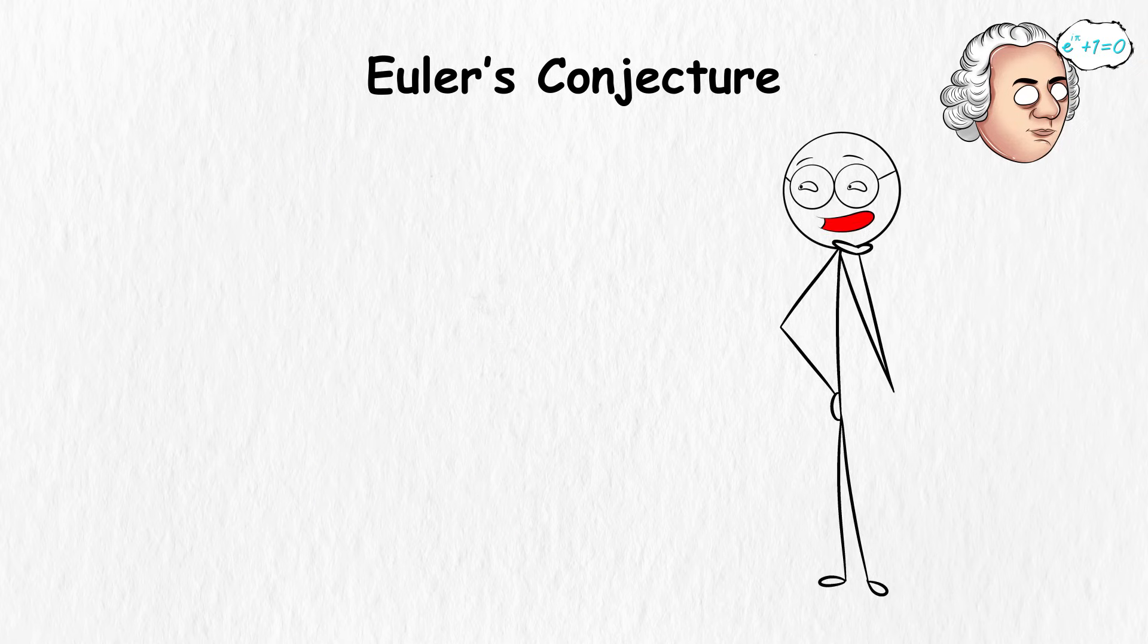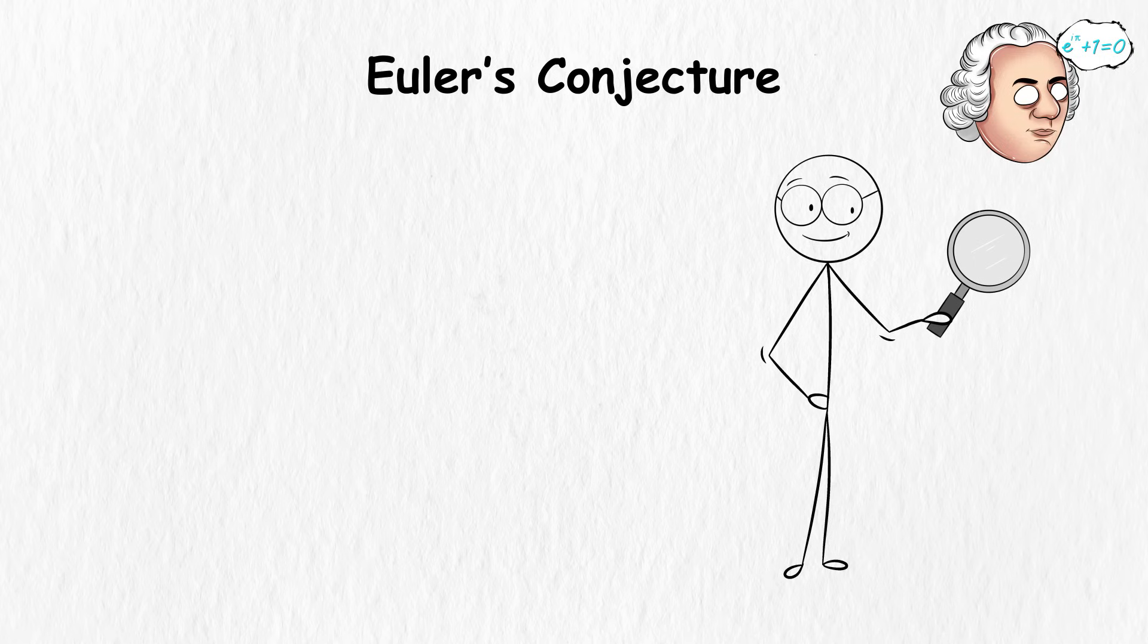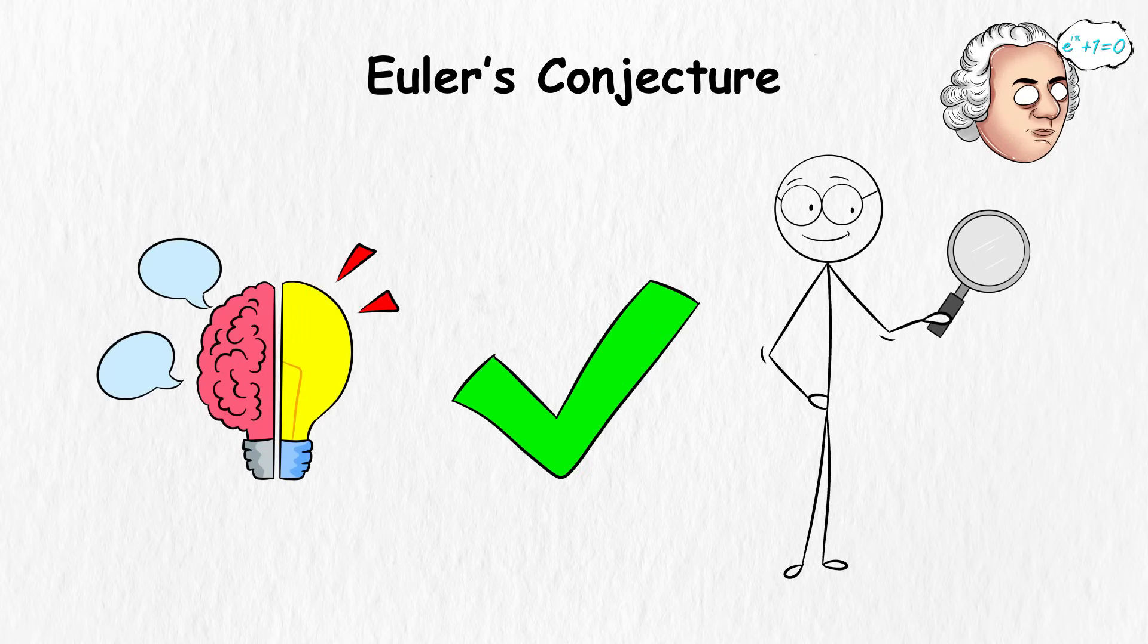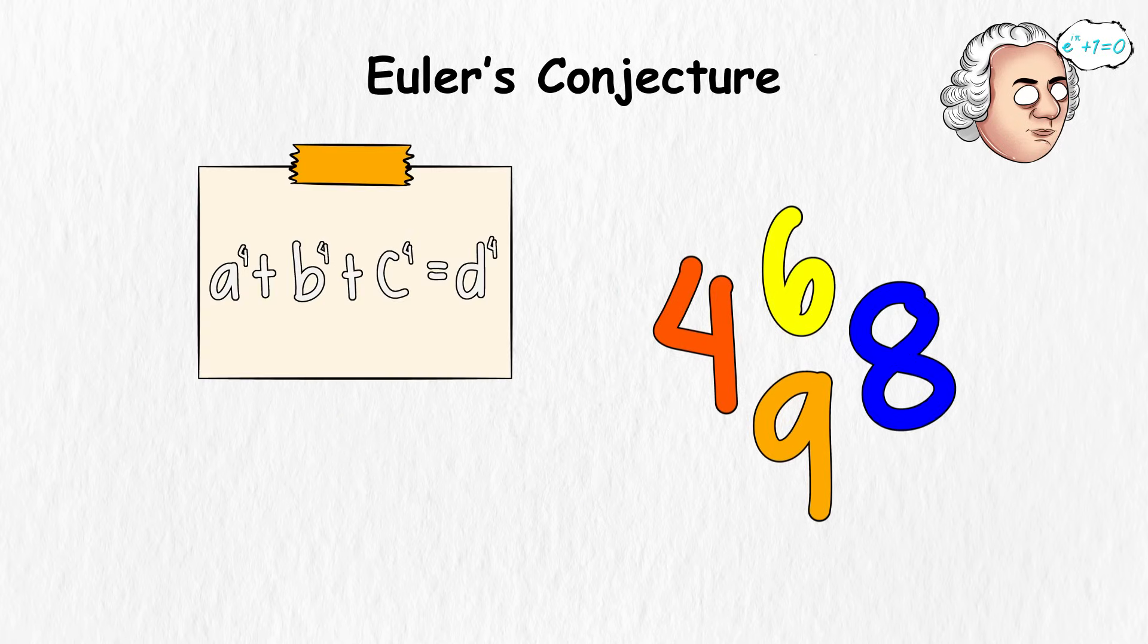Well, Euler's Conjecture is tricky because as numbers get bigger, it's hard to check every single one to see if the conjecture is right or wrong. Mathematicians have found counterexamples that show Euler's guess doesn't always work, but proving it for all possible numbers is really, really hard. That's why Euler's conjecture is considered unsolvable with our current methods.